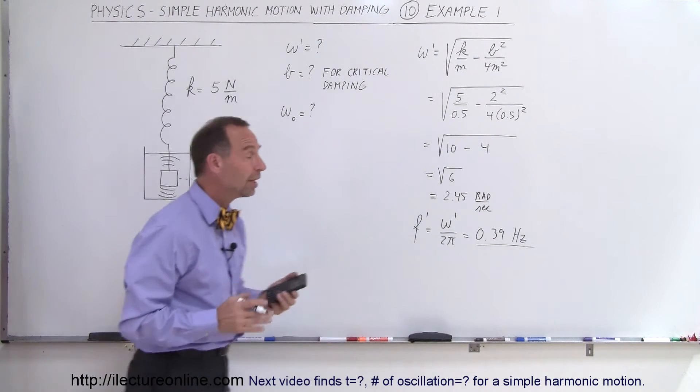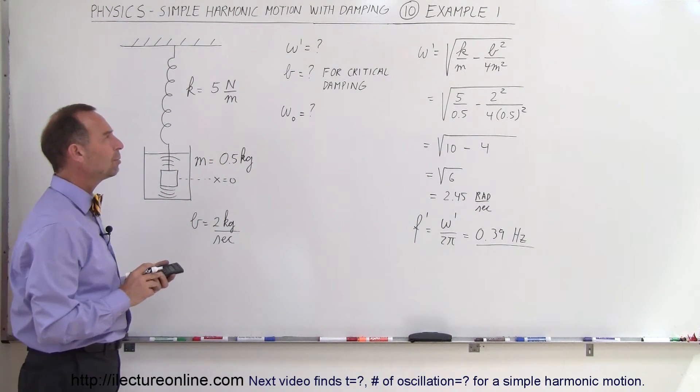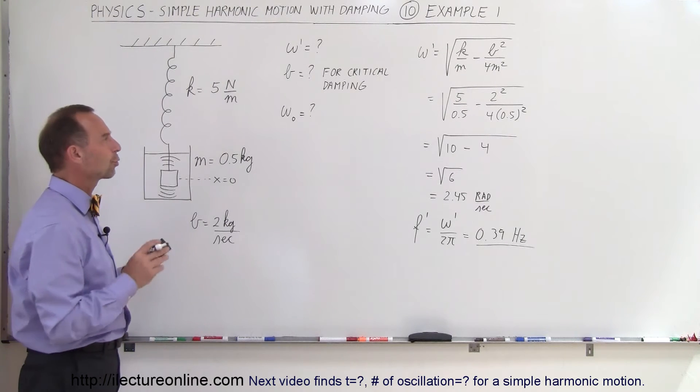Alright, so that would be the frequency on a system like that. What would be the b required for critical damping?